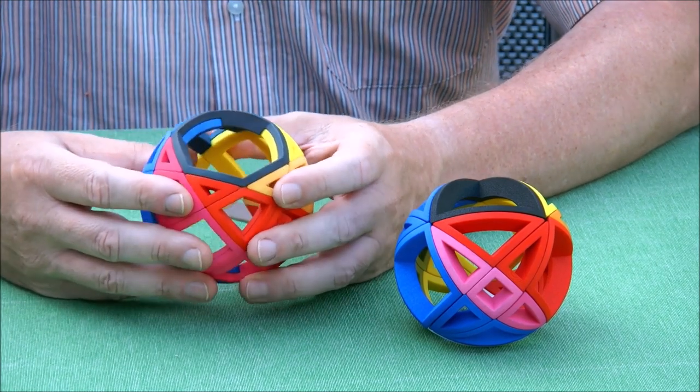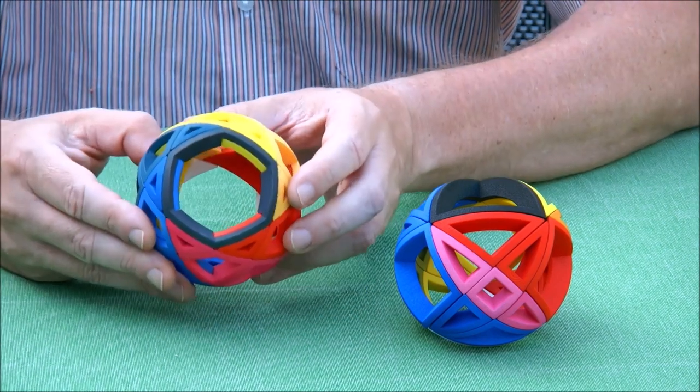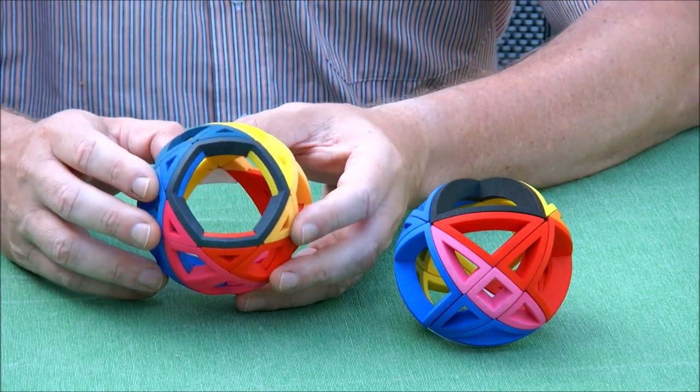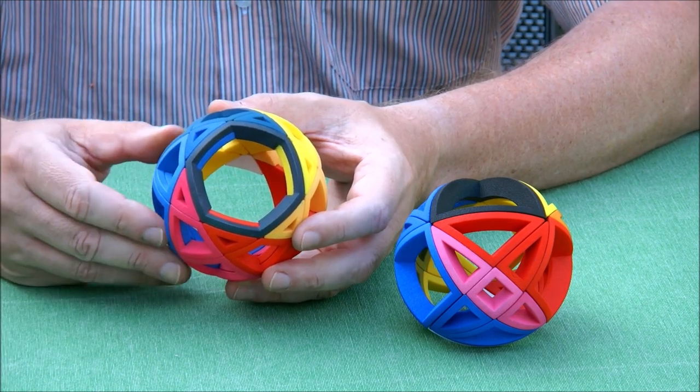And one of the things that was discussed is it looks like it has hexagonal symmetry, but actually it has only triangular symmetry because the triangular prism has triangular symmetry.